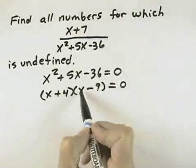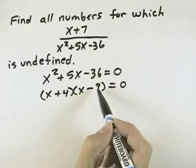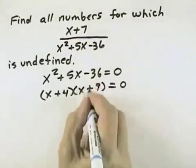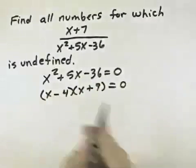Here we'll see 4 times x is a positive 4x. x times negative 9 is a negative 9x. That gives us negative 5x in the middle. Since we want a positive 5x, we can reverse these signs and know that those will be the correct factors for us to choose.